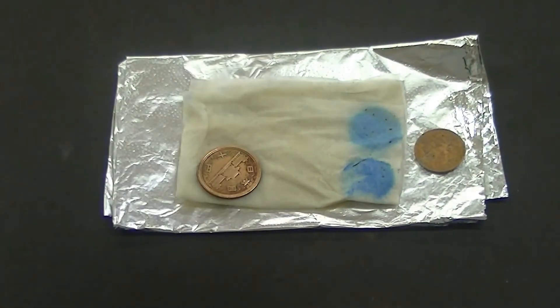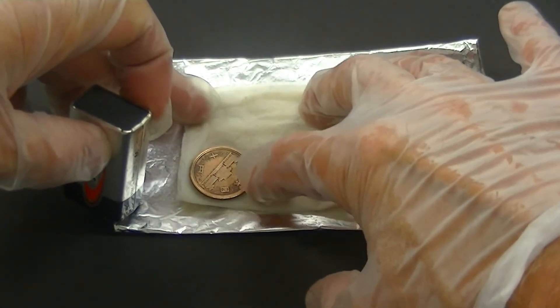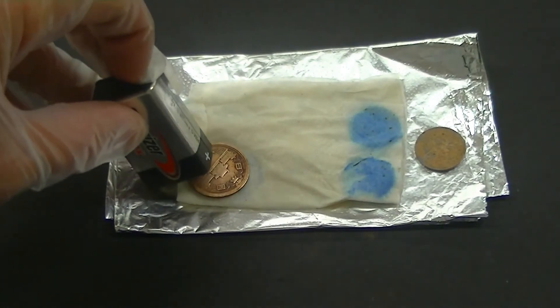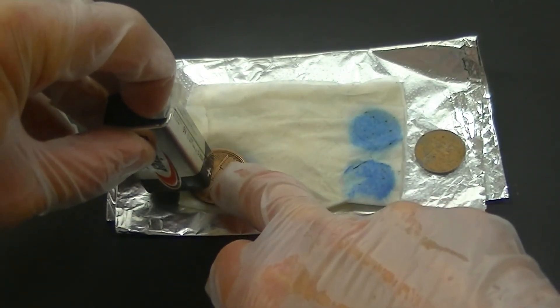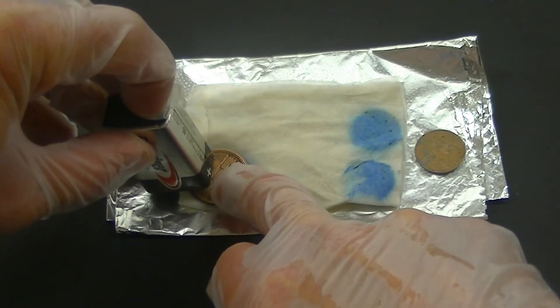Once I've done this, I'll take the treated side of the coin and flip it up so it can react with components in the air to form the patina on the surface of the coin. This usually takes a little bit of time, so let's repeat the process with the larger copper coin while we're waiting.